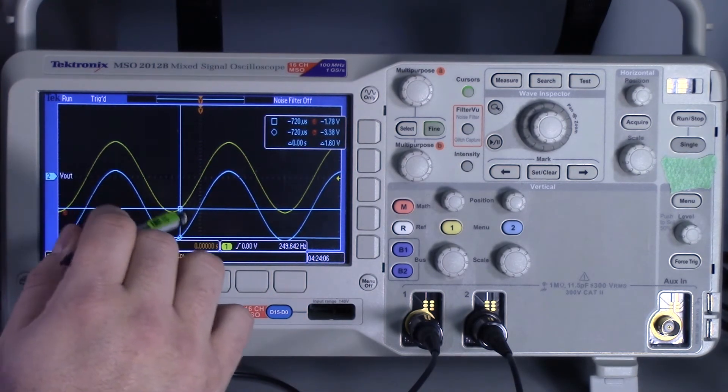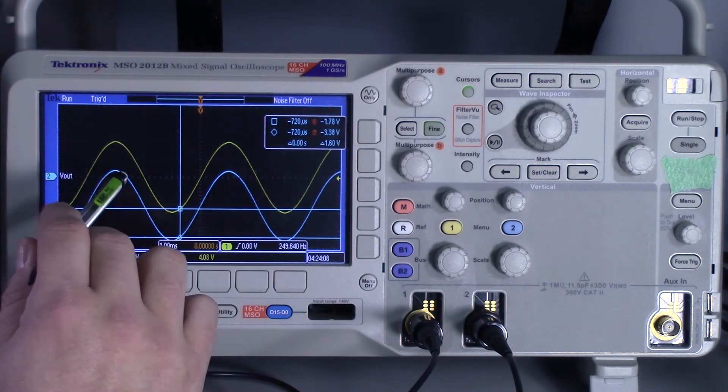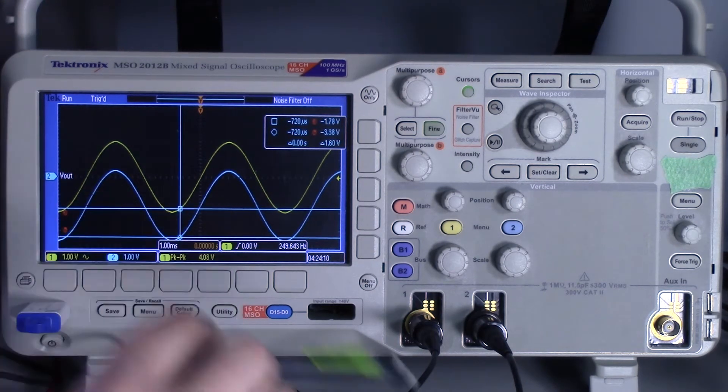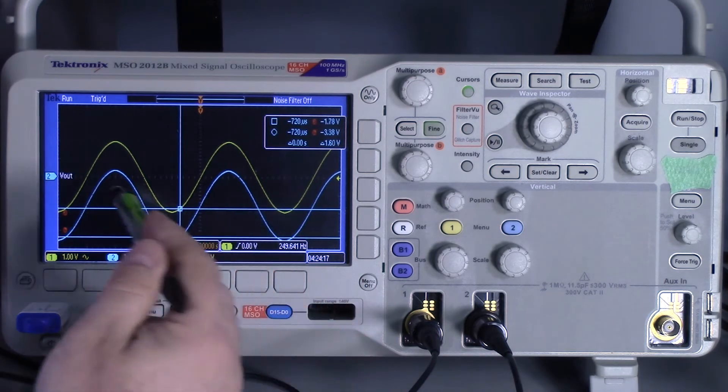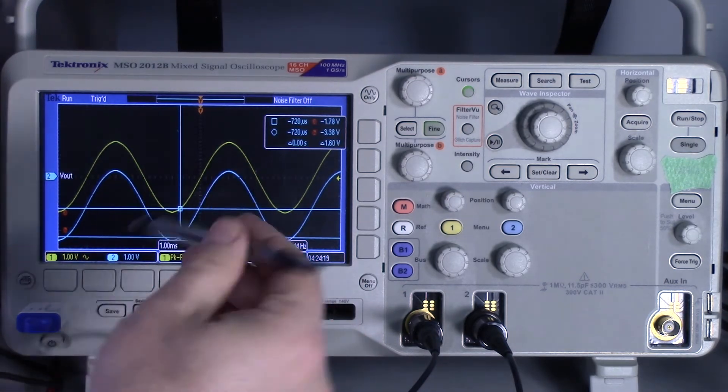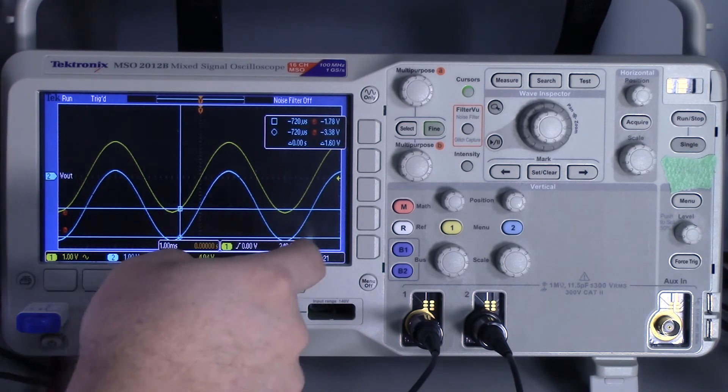So here again at this same point we have 1.6 volts. So now we can say at least at these two points that it is a constant DC voltage, but the assumption might be that it's consistent, but we can actually measure that and know for sure.